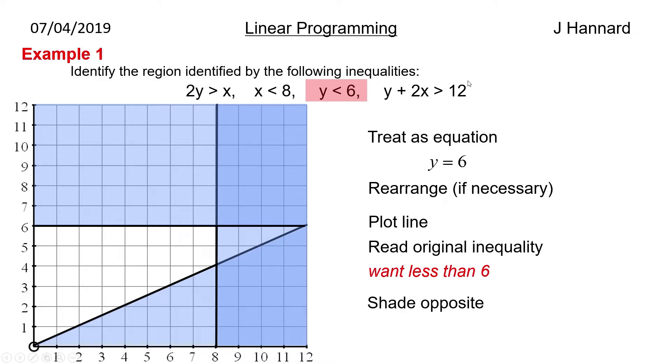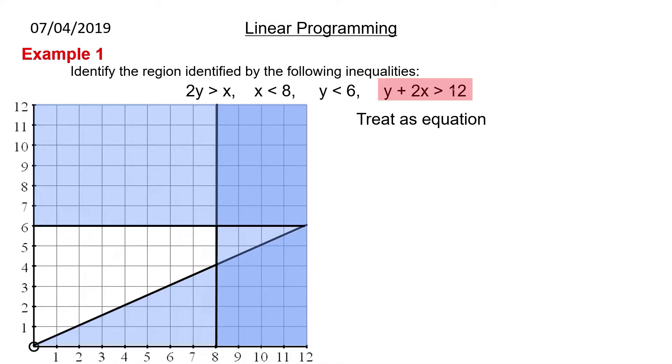Now then this is the interesting one. So y plus 2x is greater than 12. So what we do here, we treat it as an equation. y plus 2x equals 12. And then we use the cover up method. This is what I would use. I've rearranged it here. This is something else you can do is call it y equals 12 minus 2x. But what I do here is cover up the first one.